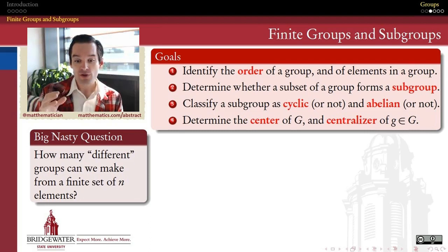But when we start to think about the commutative property, we can also try to locate some smaller places within a group in which the commutative property might hold, even if it doesn't hold on the whole group. There we'll be able to talk about the center of a group and the centralizer of an element within that group. So let's get started by pursuing this first goal: identifying the order of a group and talking about the order of elements within a group.